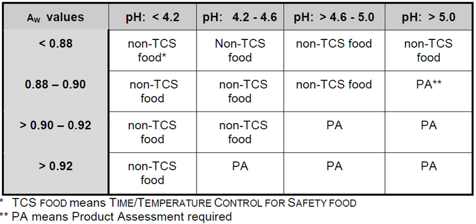Potentially hazardous food is a term used by food safety organizations to classify foods that require time-temperature control to keep them safe for human consumption. A PHF is a food that contains moisture, usually regarded as a water activity greater than 0.85, contains protein, and is neutral to slightly acidic, typically having a pH between 4.6 and 7.5.